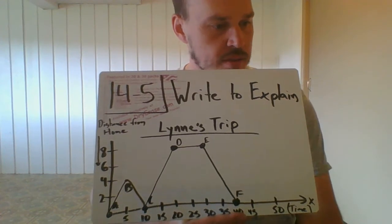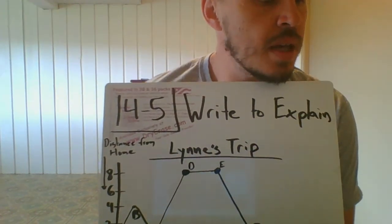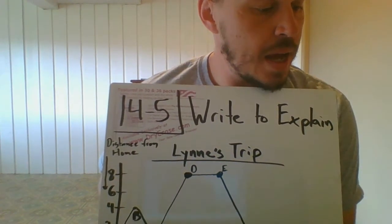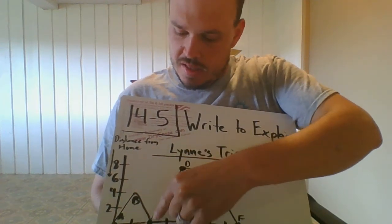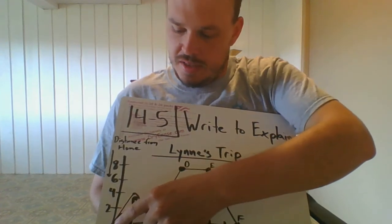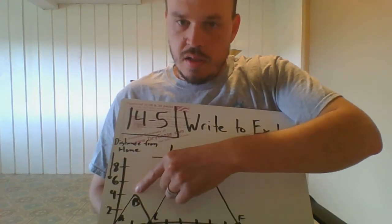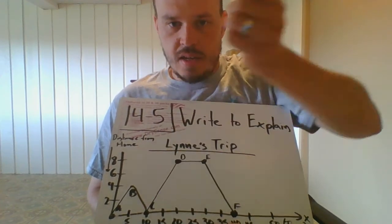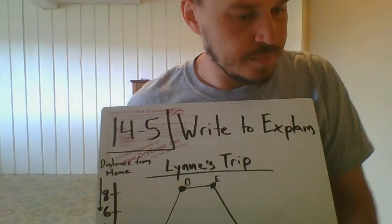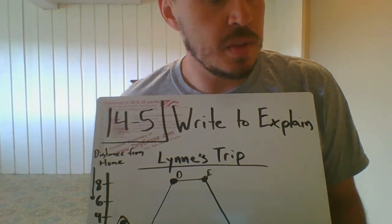Number three says: how can you explain what happened between point A and C? I would say Lynn left home, she all of a sudden thought she forgot something, she went back home and got it, and then she continued her journey.